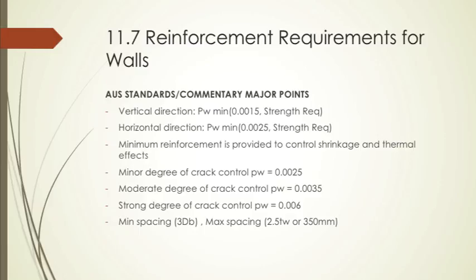The minimum requirements are provided to control shrinkage and thermal effects in addition to the strength. For a minor degree of crack control, we need ρw, or the reinforcement ratio, to be 0.0025, moderate degree we need 0.0035, and strong degree 0.006.